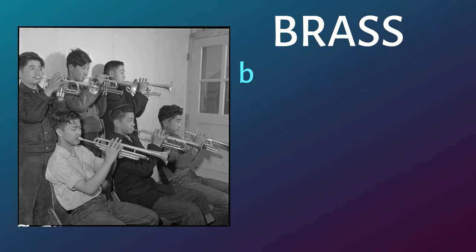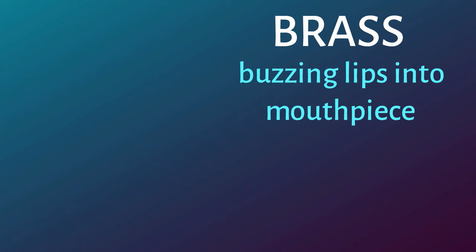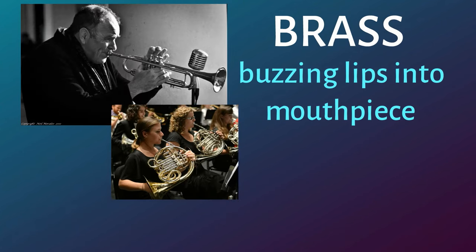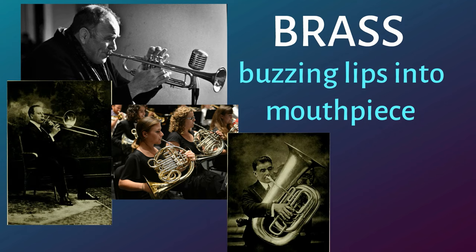The brass family produces sound by buzzing their lips into mouthpieces. That's right, they blow raspberries into tubes. Examples include the trumpet, horn, trombone, and tuba.